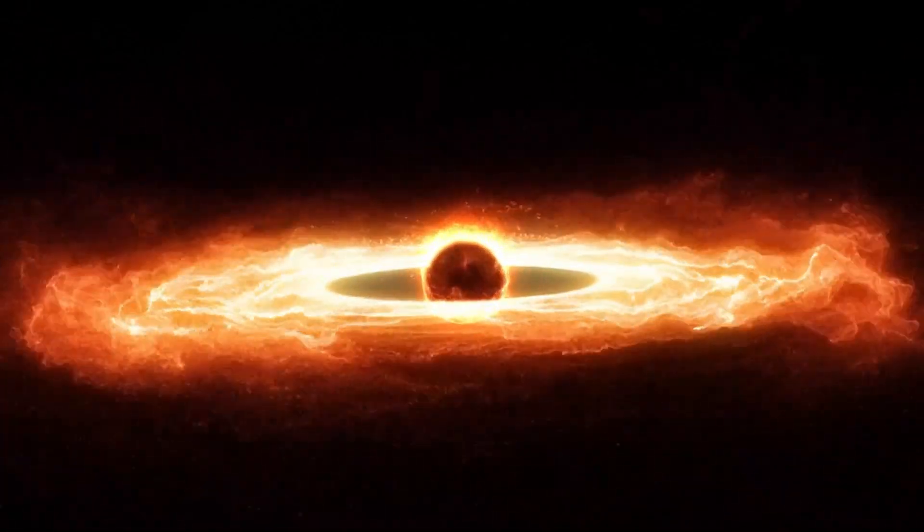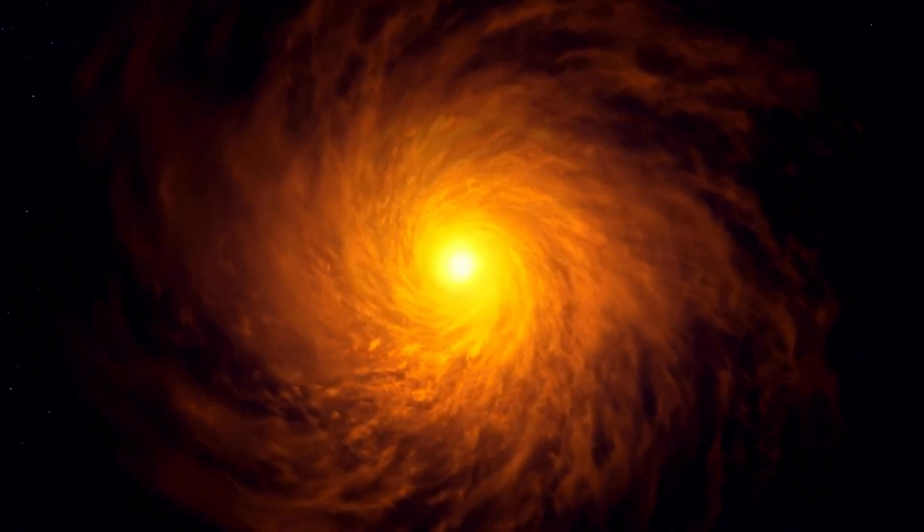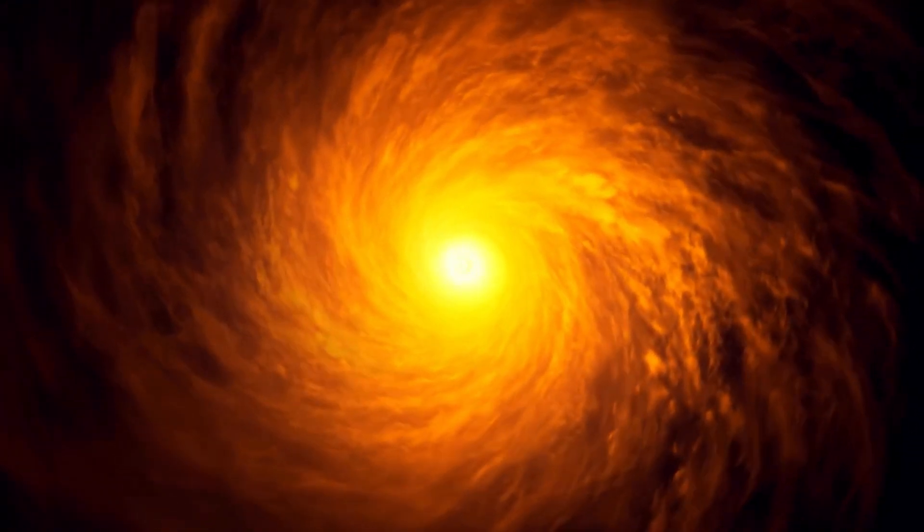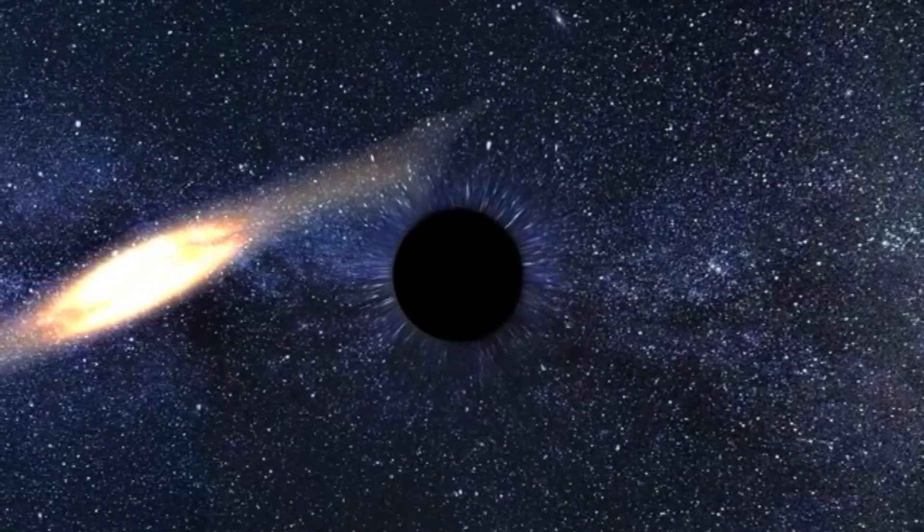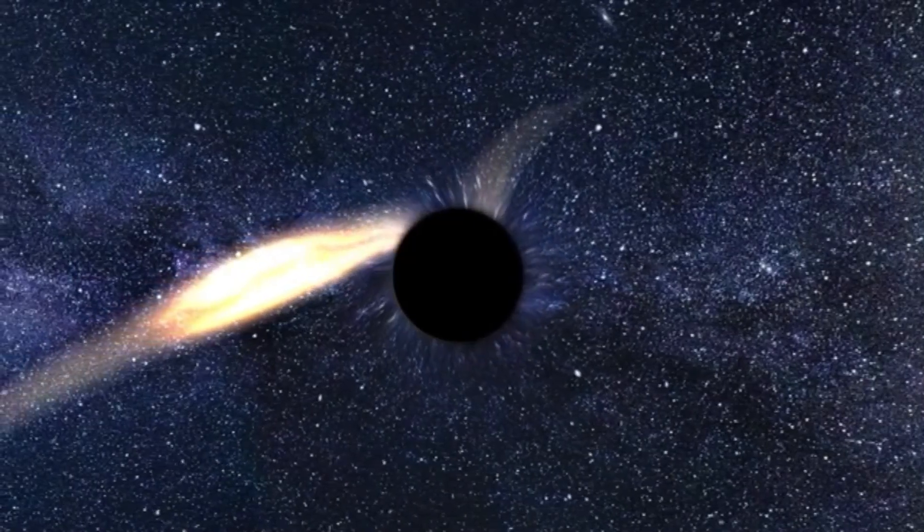Detecting black holes is no easy task since they don't emit any light. However, scientists have found ways to infer their presence by observing their effects on nearby matter. For example, if a black hole passes through a cloud of interstellar matter, it will pull that matter towards it in a process called accretion. Additionally, when a normal star gets too close to a black hole, it can get torn apart, emitting x-rays as it does so.